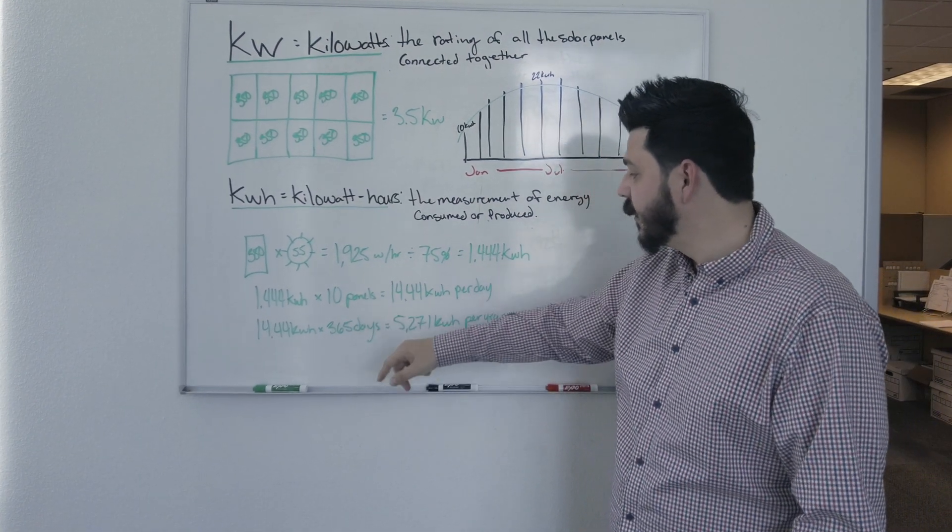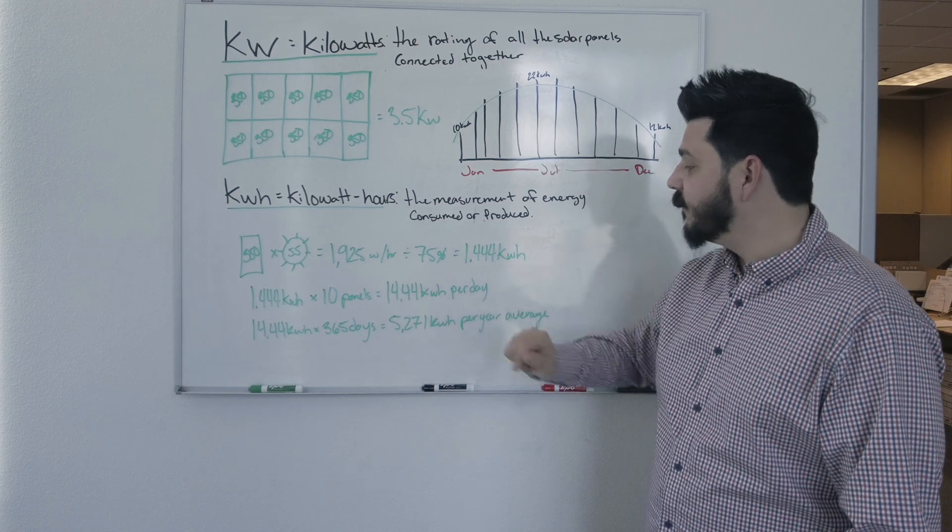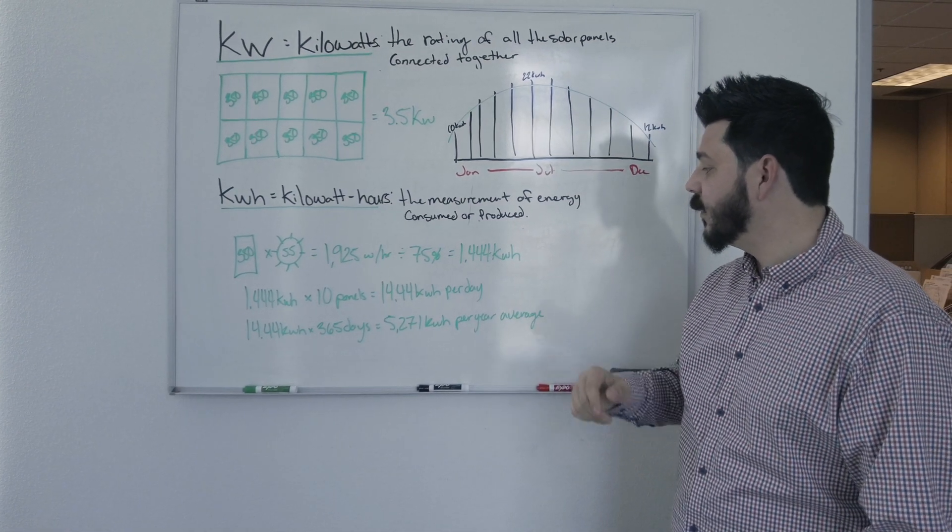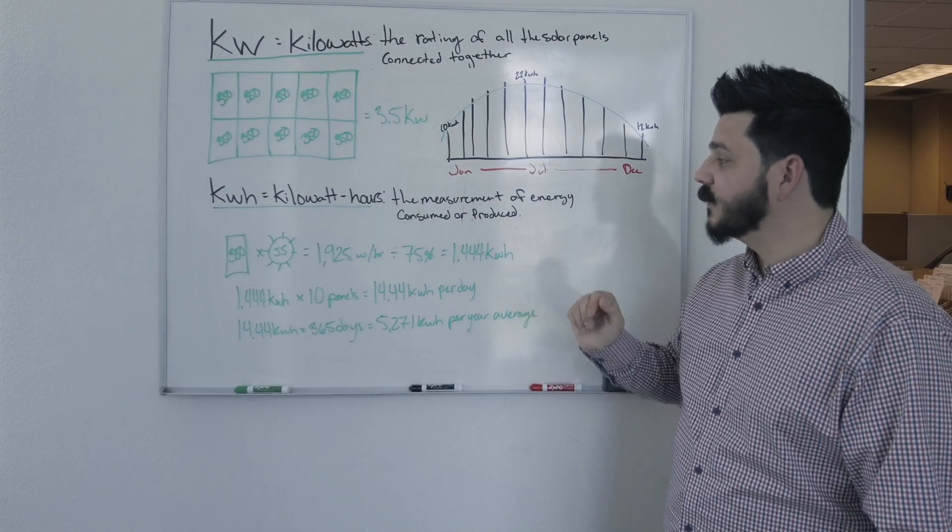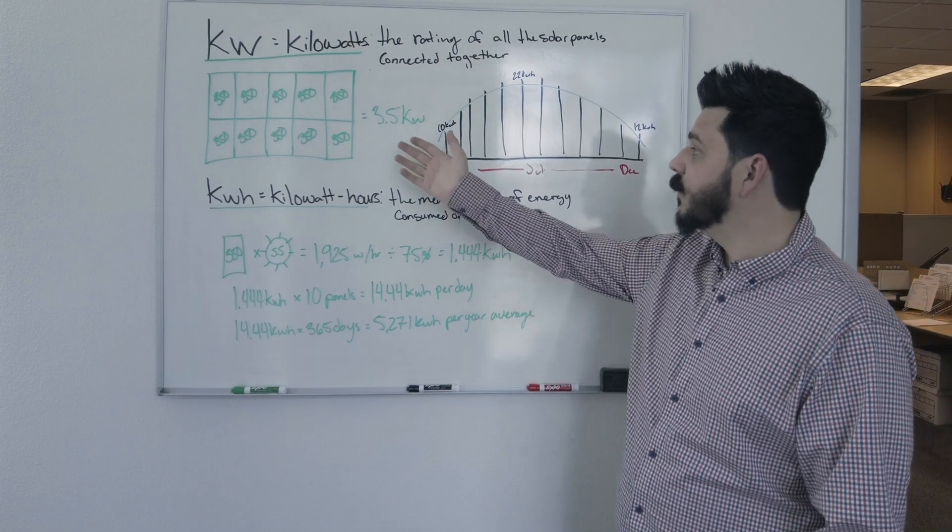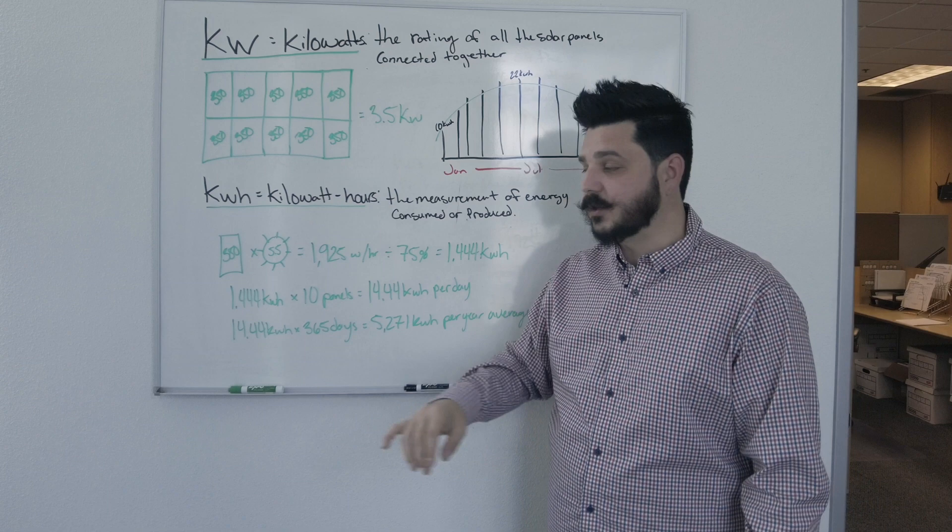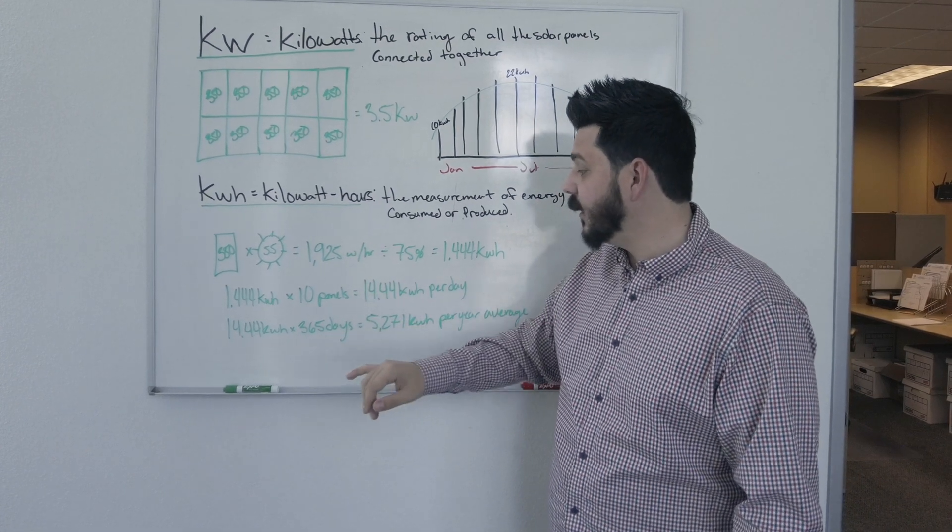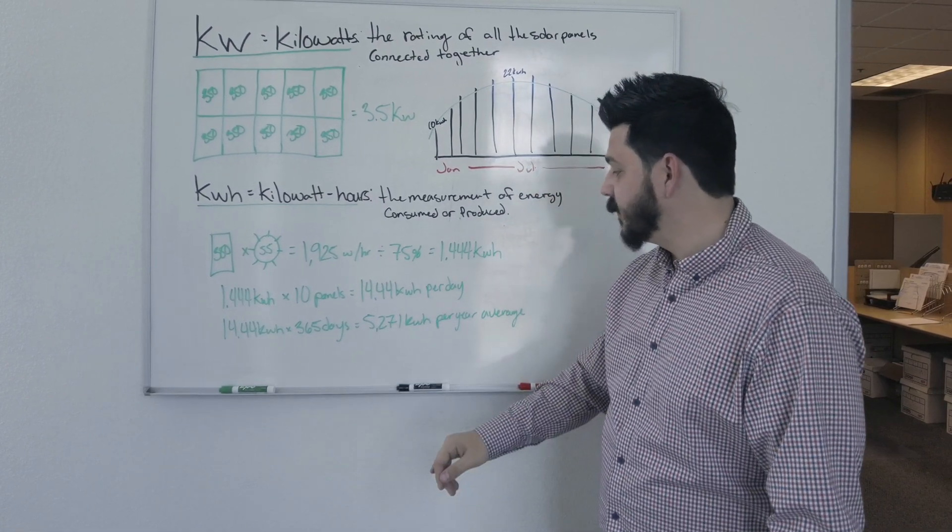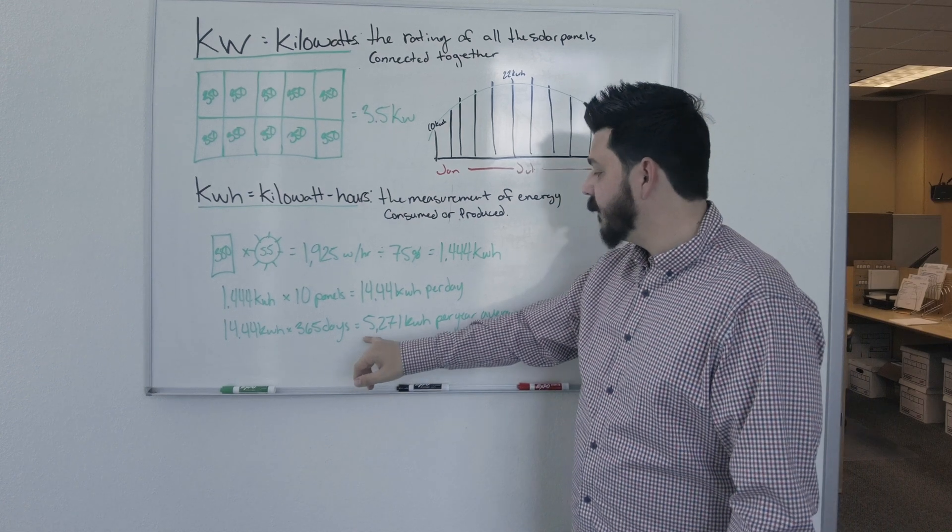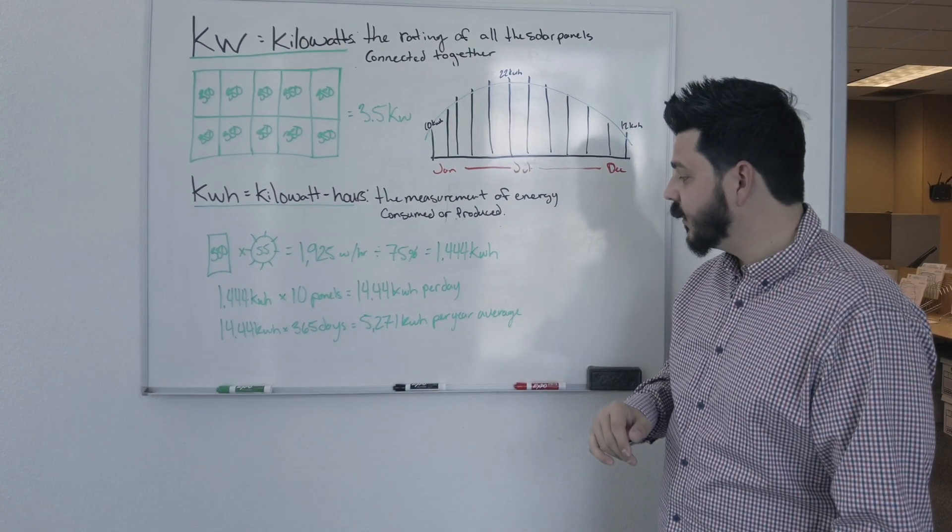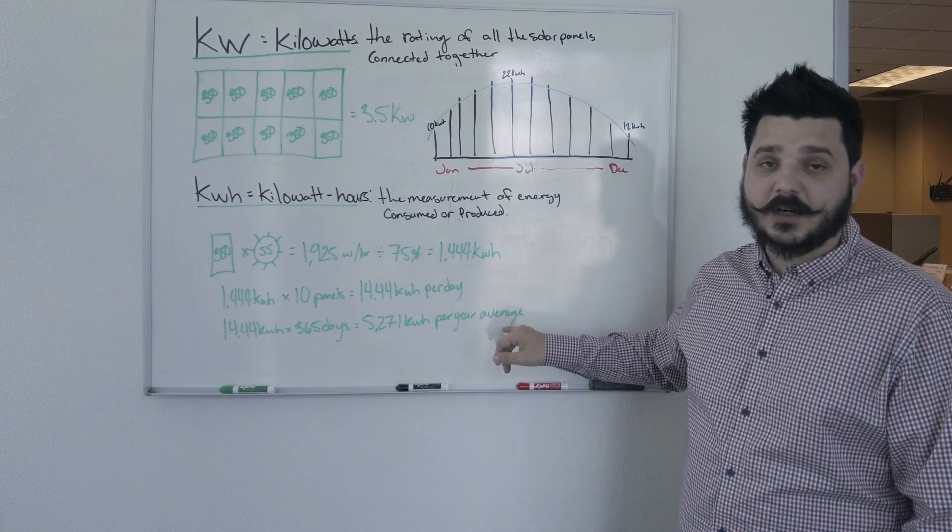That will equal 1.444 kilowatt hours per day from one of these 350 watt panels. If we multiply by 10, because we have 10 of them, we'll have a 14.44 kilowatt hour per day solar system. That's pretty reasonable for a 3.5 kilowatt solar system. But we want to know the annual production. We're going to take this daily and multiply it by 365 days, which will give us 5,271 kilowatt hours per year on average.